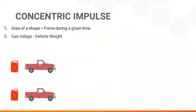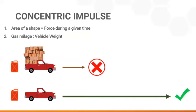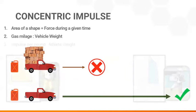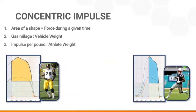Imagine if we gave the same amount of fuel to identical cars, but one of them needed to move lots of heavy bricks. The added mass decreases fuel efficiency — the same tank of gas is now less effective and can't take the car as far. It's the same for athletes: greater body mass dilutes the benefits of an applied force.